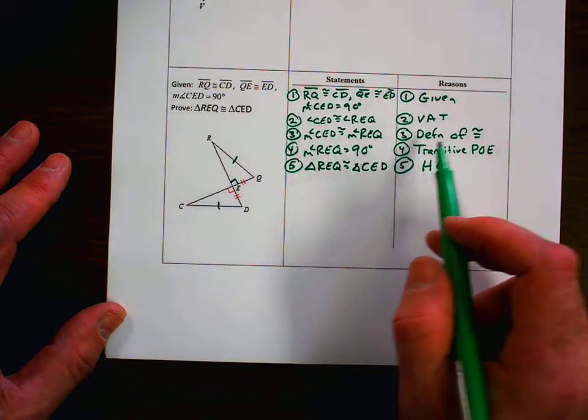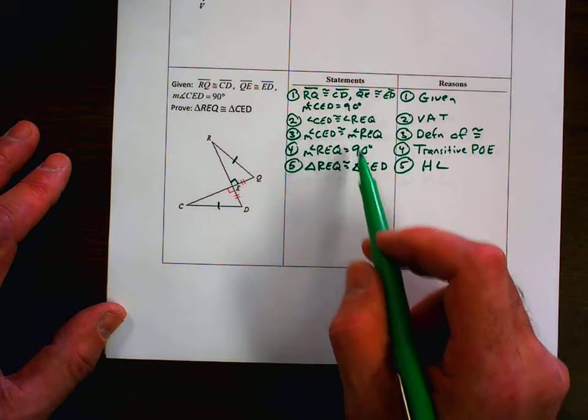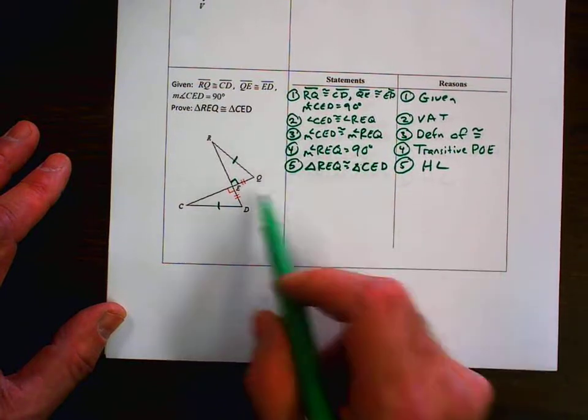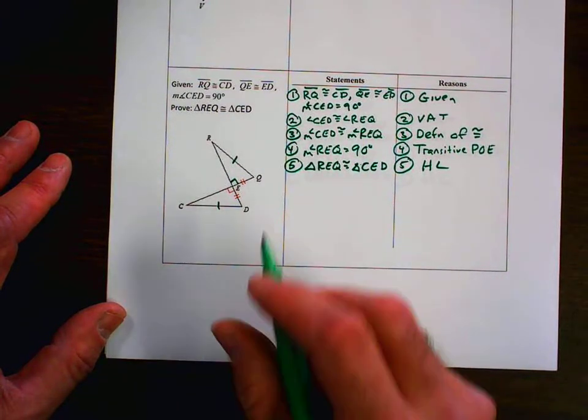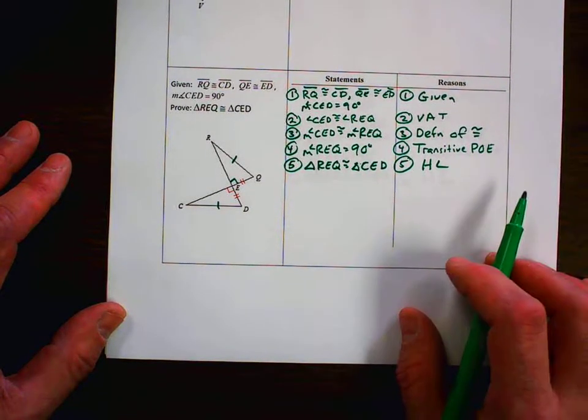In this situation, we had to use definition of congruence because we had a congruence statement and then we wanted to start talking about the actual angle measure so that we'd have two right triangles. So this would be truly, I think, the best way to prove that.